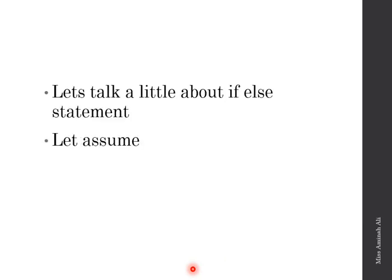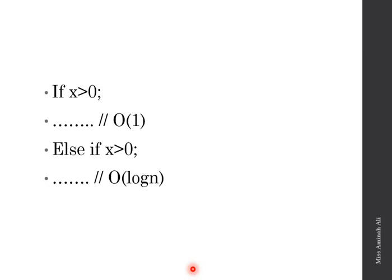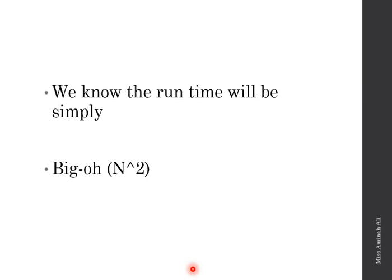Let us also talk about if-else statements. Suppose we have: if x > 0 — constant time O(1); else if — run time O(log n); else — run time O(n²). If we consider all these Big O notations, the total run time is simply O(n²) because it dominates. O(log n) takes less time — as we saw, constant time comes first, then log n. We will discuss O(log n) in more detail later.